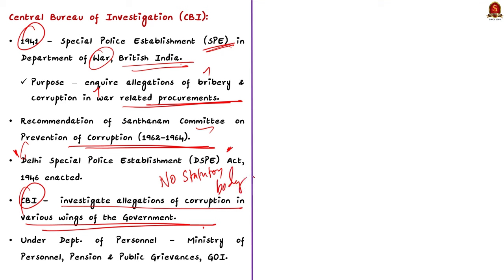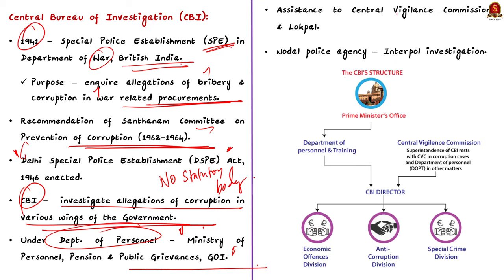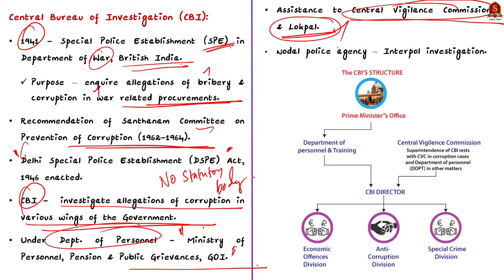Currently, the CBI is functioning under the Department of Personnel under the Ministry of Personnel, Pension and Public Grievances. It is the premier investigation police agency of India. In carrying out its duties, it also provides assistance to other investigation agencies like the Central Vigilance Commission and Lokpal. It is also the nodal police agency of India which coordinates investigations on behalf of Interpol member countries.